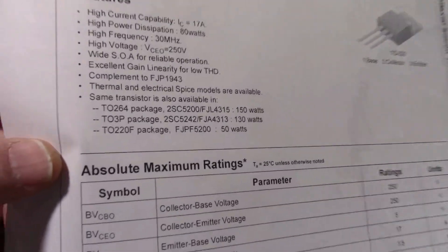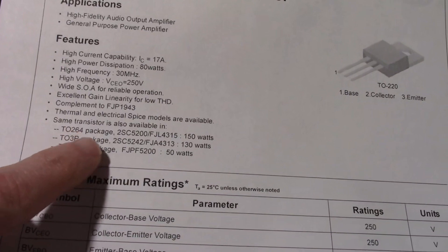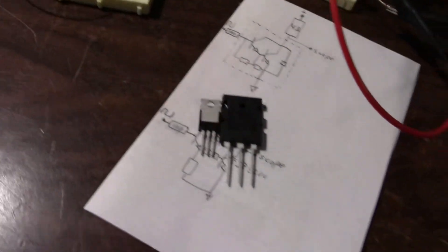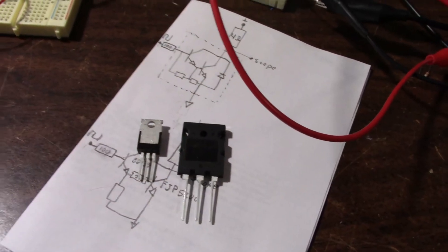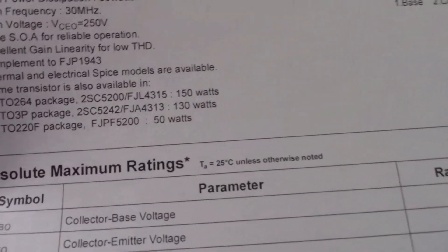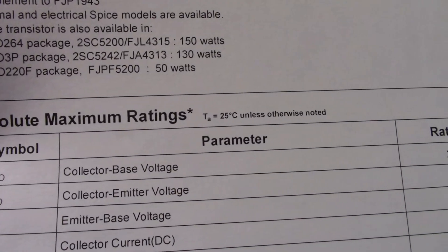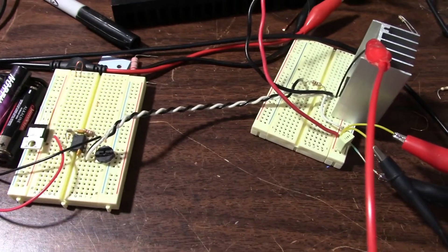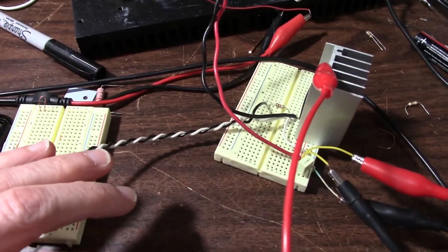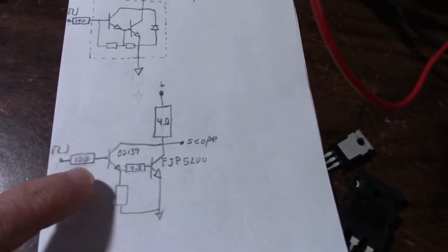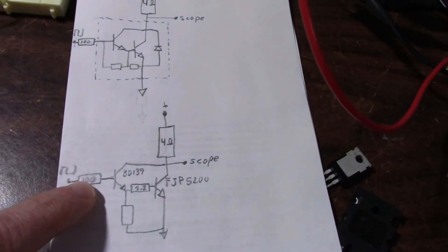You can see here, there's the TO264 package 2SC5200, which is this one here. Even comes in a TO3P type package, and it looks like they give a different number for it. So in today's video, I just want to see a comparison between those monolithic Darlingtons and the output circuit I'm using in the 501 amp, which I'm going to use in this circuit, the Easy Amp.